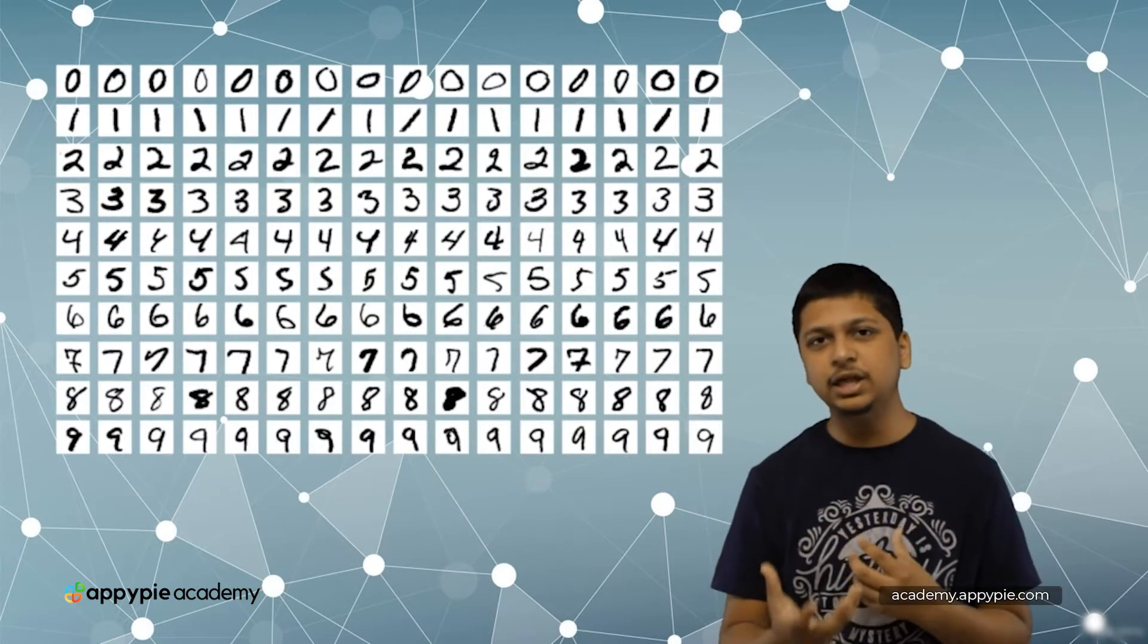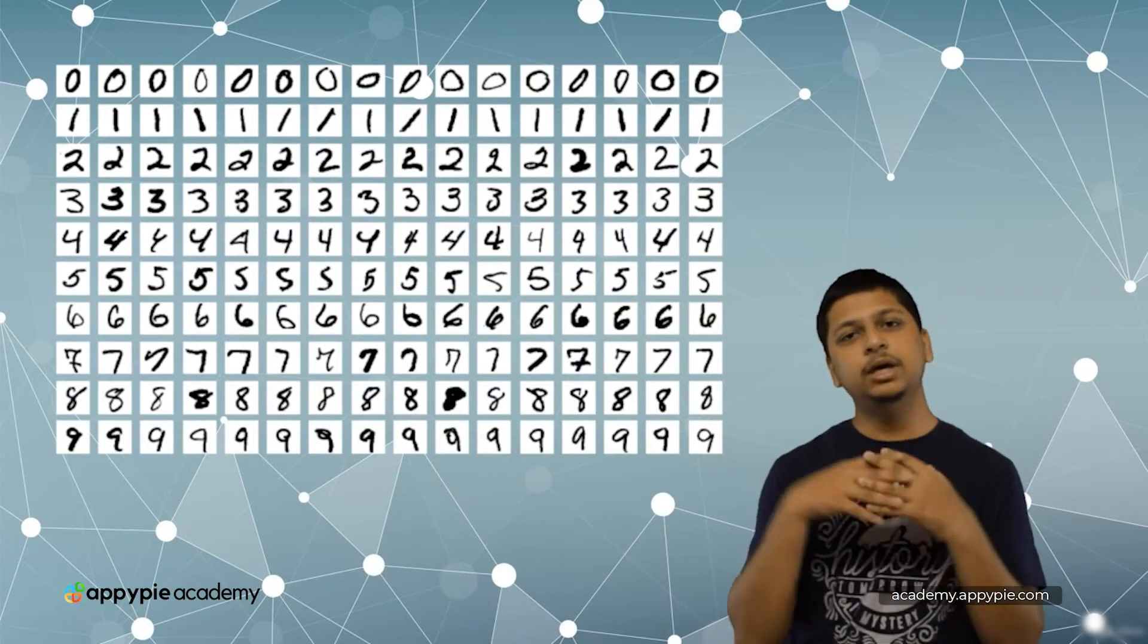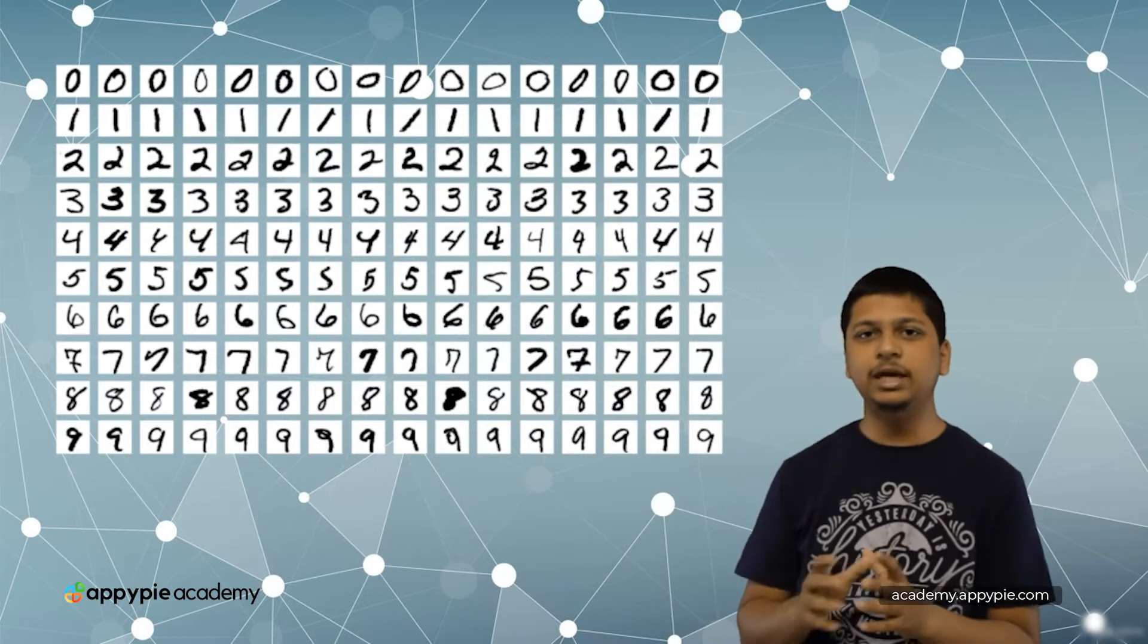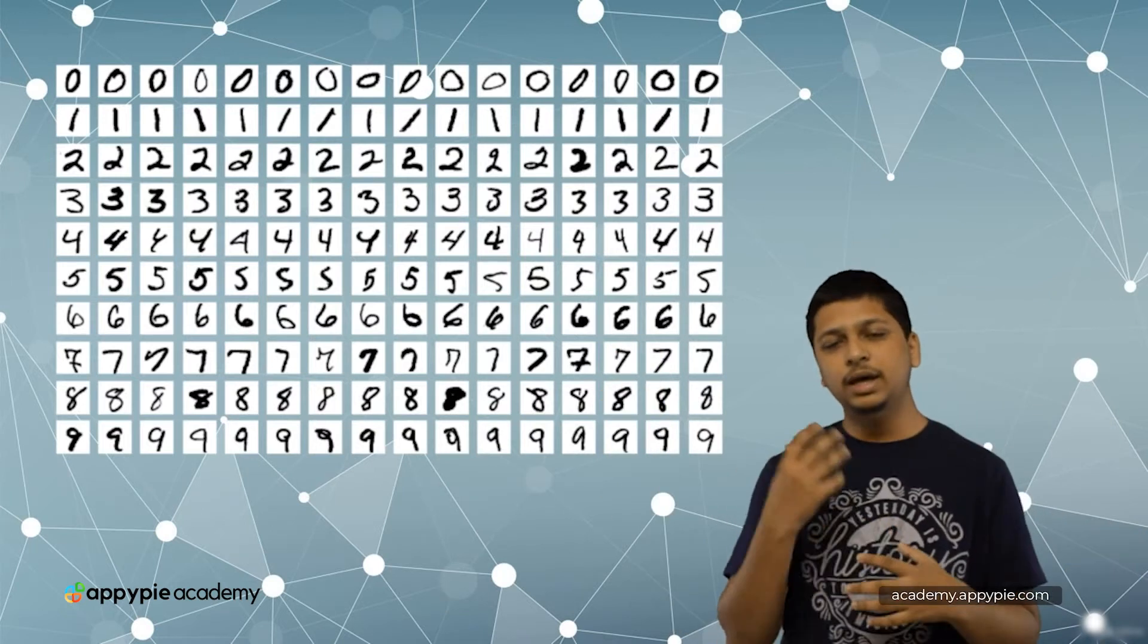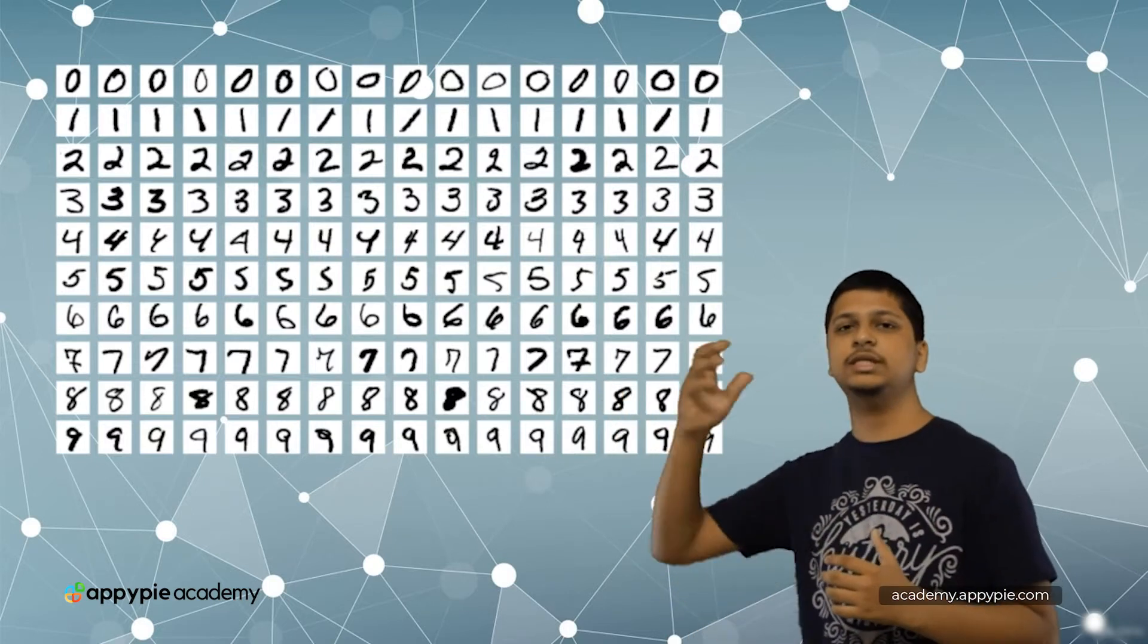By classification, I basically mean to recognize these particular digits. The MNIST database is a large database of handwritten digits. Let's say you have to make a computer program which can recognize those digits.